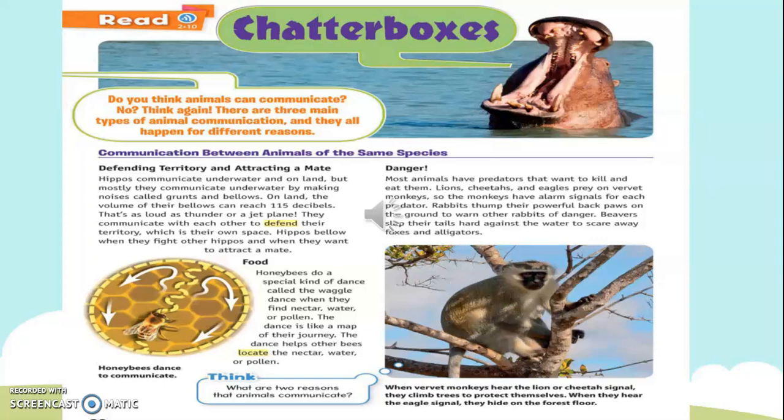Wow, what an informative page this is! So from this page, we came to know there are three types of animal communication. The first one is among each other — when they communicate with each other, they do so for three reasons: when they are defending their territory or attracting a mate, when they have found food and want to communicate it, and the most important thing, when they feel danger and want to protect their other species. How do they attract a mate and defend their territory? We are given the example of a hippo, who uses grunts and bellows to communicate underwater. They produce these sounds to attract their mate and to defend their own territory.